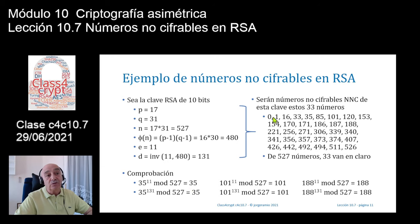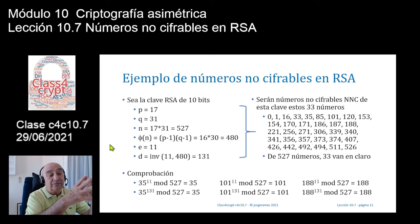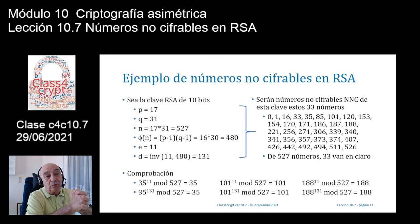Lo mismo sucede con el 85, el 101 a la clave pública y a la clave privada, me sale 101. El 188 elevado a la clave pública, a la clave privada, me sale el 188. Sucede para cualquier número de esa lista: elevándolo a cualquier valor X me sale exactamente el mismo número, con lo cual irían en claro.